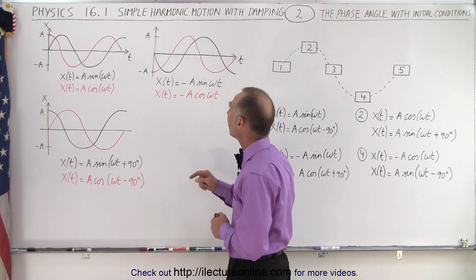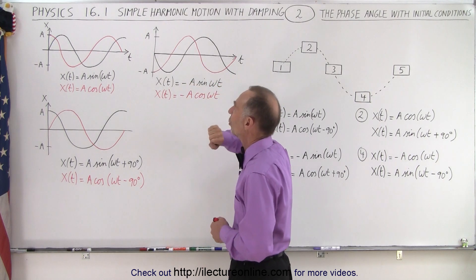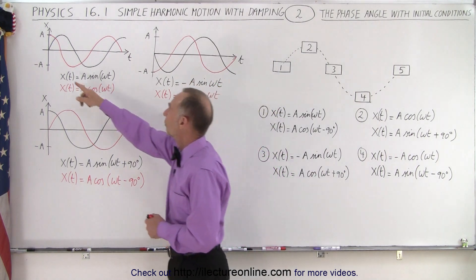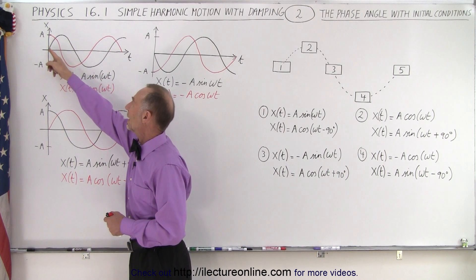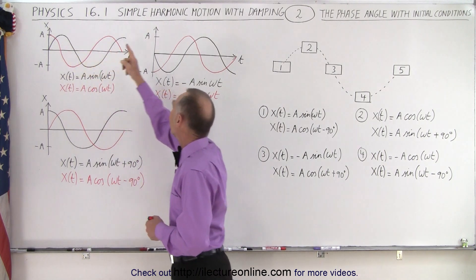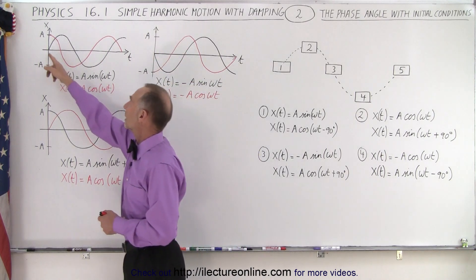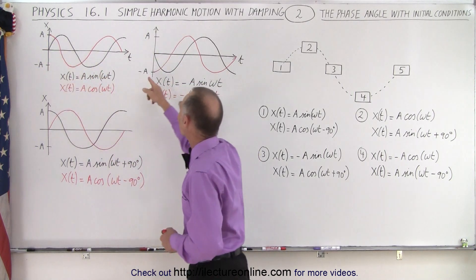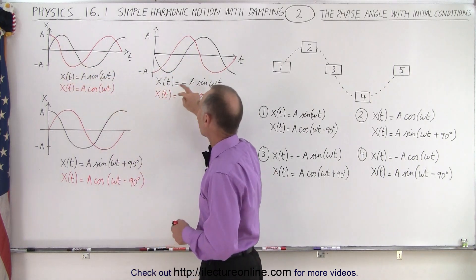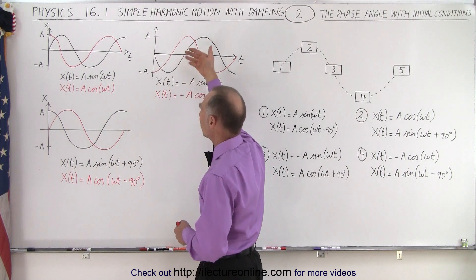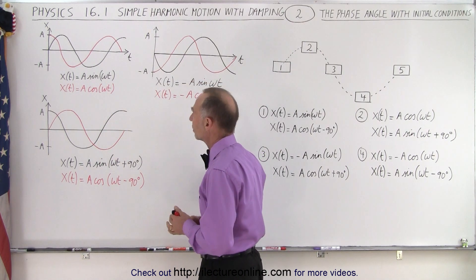Notice what happens if we put a negative sign in front — it essentially flips the function over. So for the sine function it starts at time equals zero at x equals zero and then it goes down instead of up. For the cosine function, instead of starting at plus a it will start at minus a and then move up instead of going down. By putting a negative sign in front we simply flip the graph over.